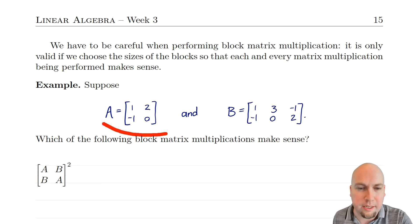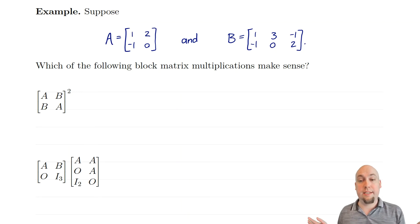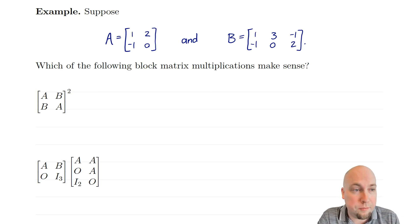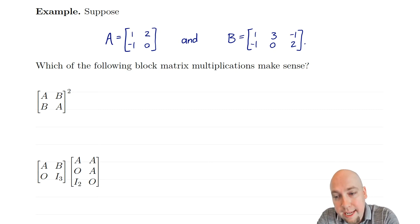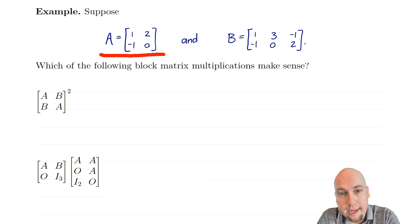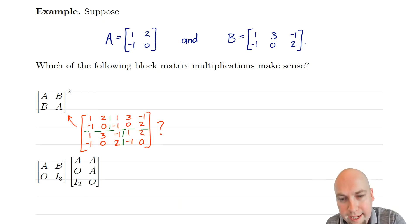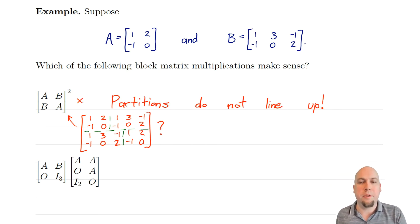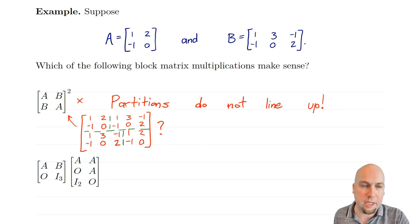Suppose we have a two-by-two matrix A and a two-by-three matrix B. Consider the block matrix [A, B; B, A] squared. There's a problem: A has two columns and B has three columns, so putting A on top of B is ill-defined — they have different numbers of columns. Alarm bells should be going off. The partitions don't line up. If you ever have a matrix stacked on top of another, they must have the same number of columns. Similarly, matrices side by side must have the same number of rows.